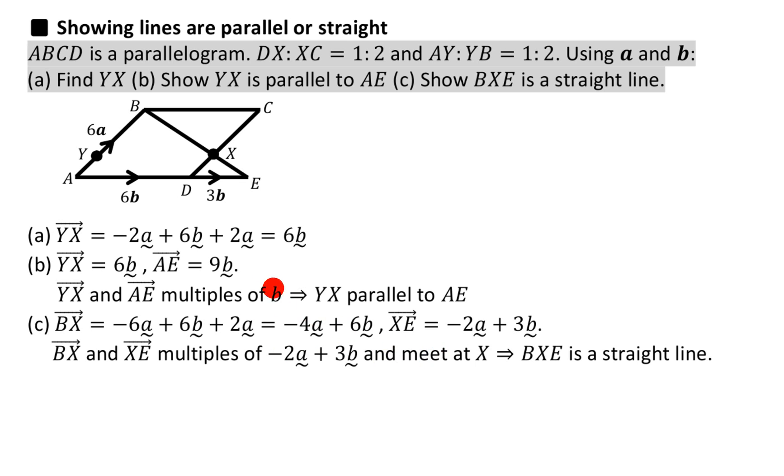And the only difference between proving something is parallel or in a straight line is that parallel lines don't meet. But straight lines - if you want to show something's in a straight line, it's pointing in the same direction, but it's got to meet to make a line, a single line. So you have to say two things: yes, it's a multiple of something, and one tiny fact - it meets at X.